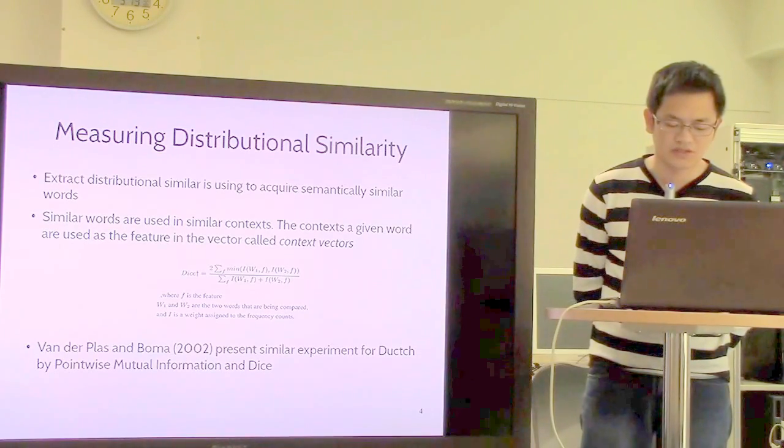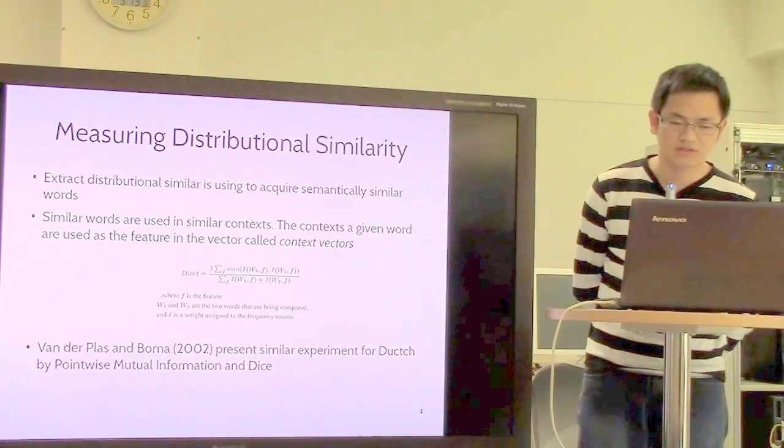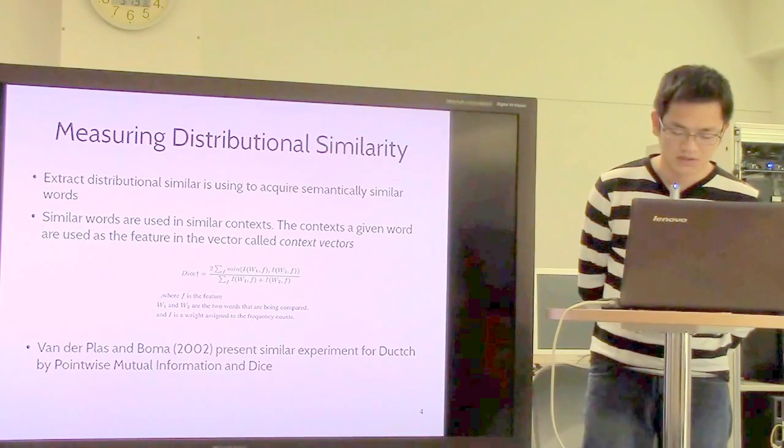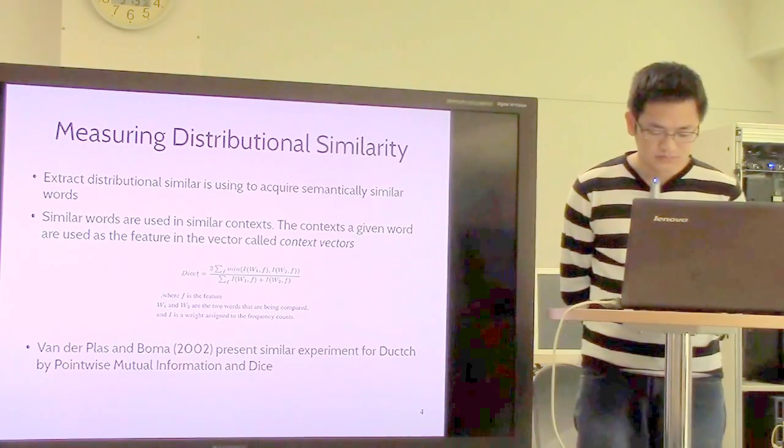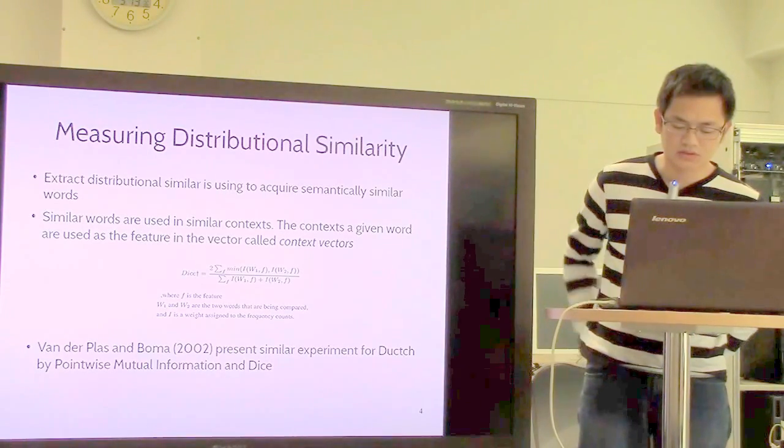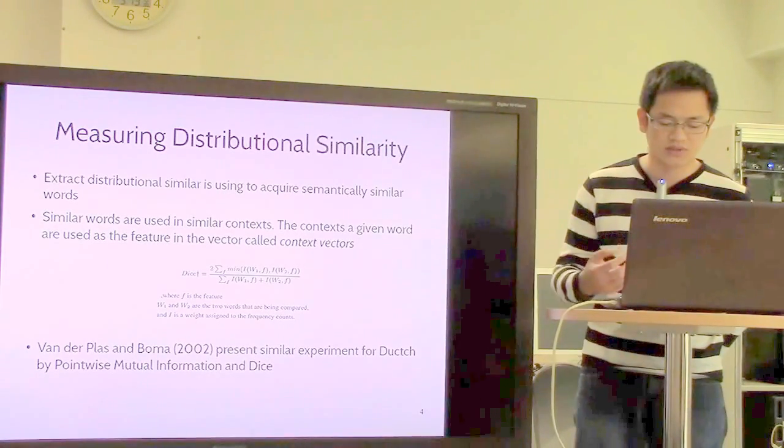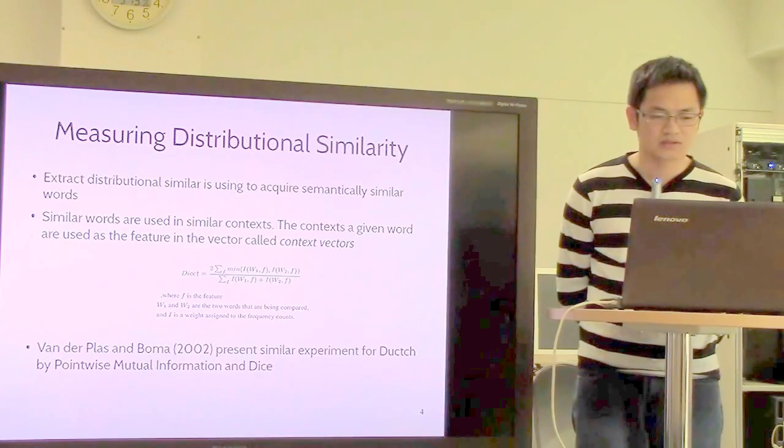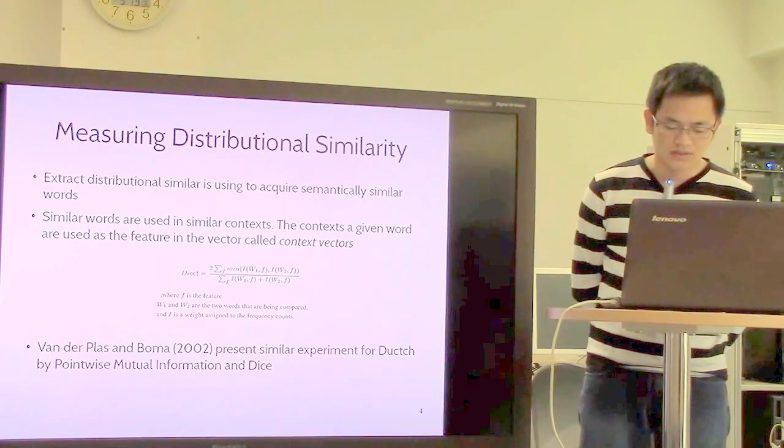They use feature vectors for each given word, which they call context vectors. To calculate the distributional similarity between words, they use the context vectors and compare them.